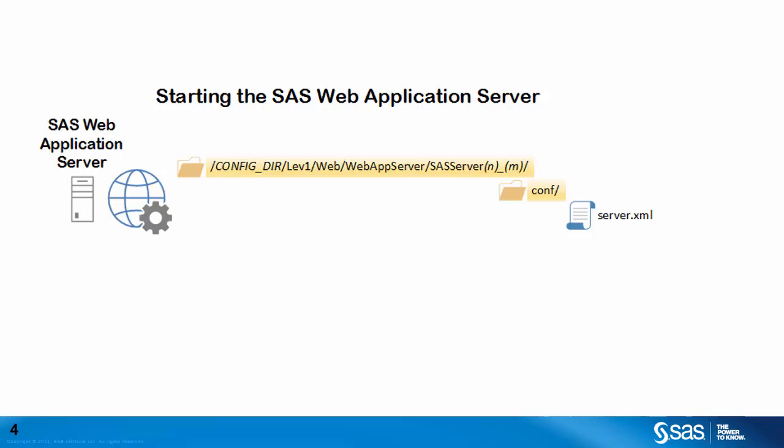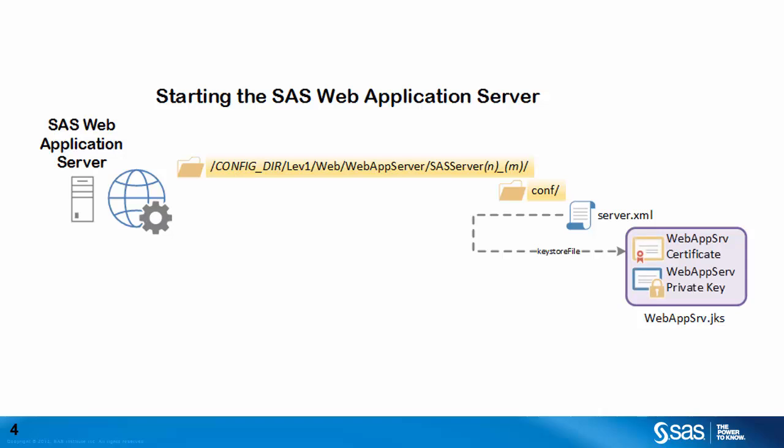The server.xml file contains the majority of the configuration settings for the SAS web application server instance. Within the server.xml file we define the connections the SAS web application server listens on. One important property of an HTTPS connector element is the keystoreFile directive. The keystoreFile directive points to a Java key store. To keep the configuration simple, we call the file webappserver.jks and put it into the conf subdirectory along with the server.xml. The webappserver.jks Java key store contains both the private key and public identity certificate for the SAS web application server host.